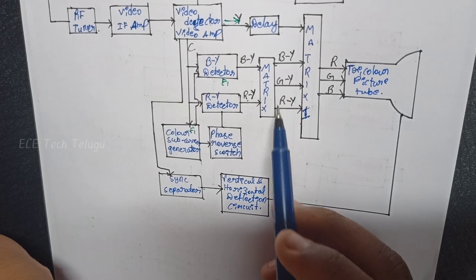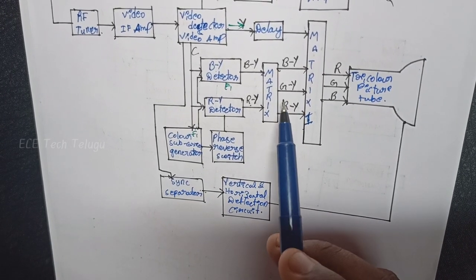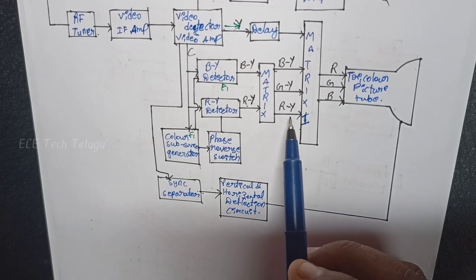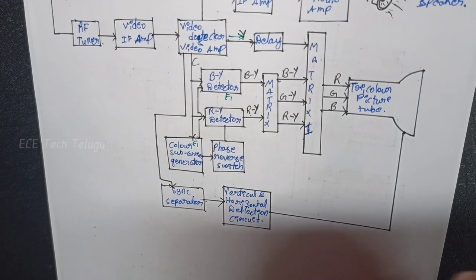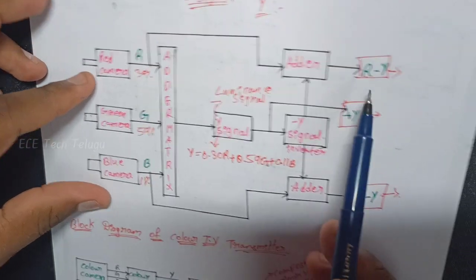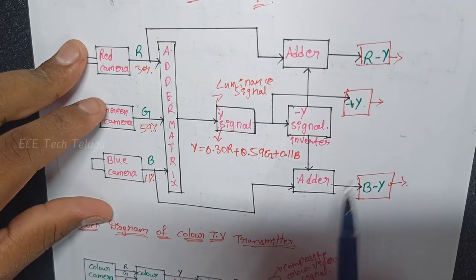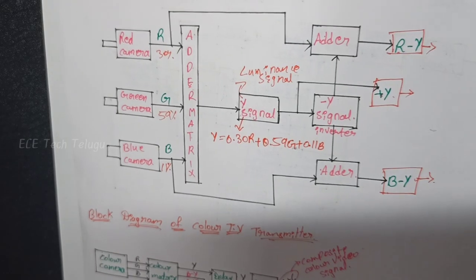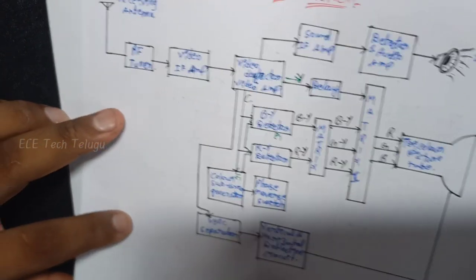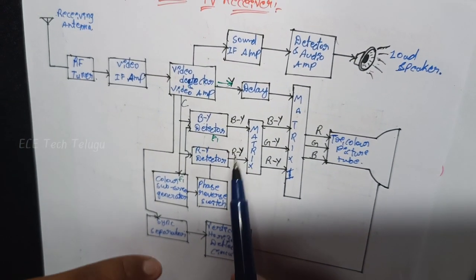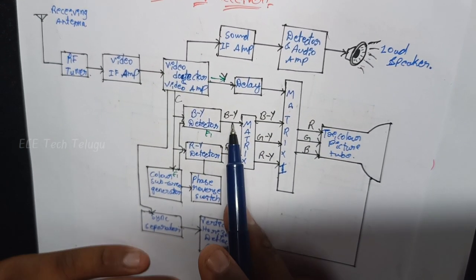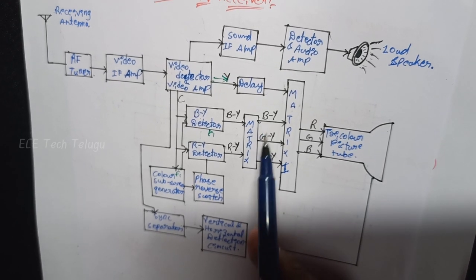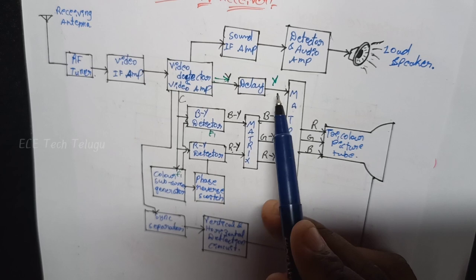The B-Y and R-Y signals are fed into the matrix. In the matrix we can derive B-Y, G-Y, and R-Y signals. Blue, green, and red — these three signals are generated. Importantly, G-Y is not transmitted separately; it is embedded within the B-Y and R-Y signals, so we can derive G-Y from B-Y and R-Y at the matrix. The Y signal used here is the output of the delay line.